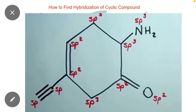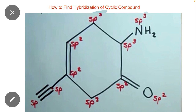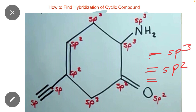In this video we will study how to find hybridization in cyclic compounds. As you can see, a cyclic compound is given on screen and we have to identify its hybridization. Keep in mind: if only a single bond is present, hybridization will be sp3; if a double bond is present, hybridization will be sp2; and if a triple bond is present, hybridization will be sp.